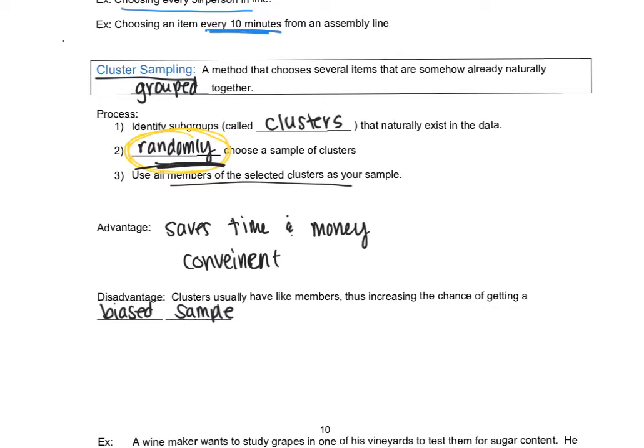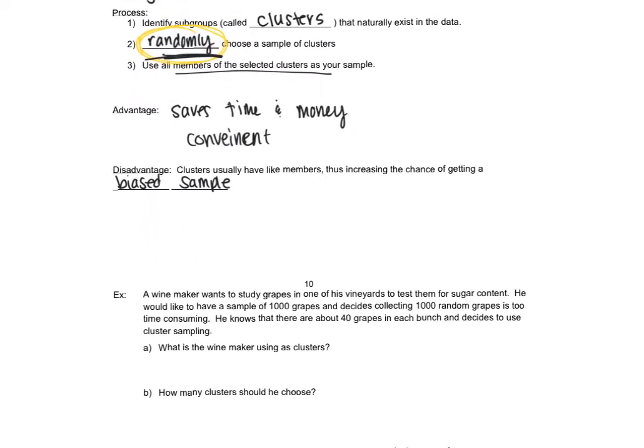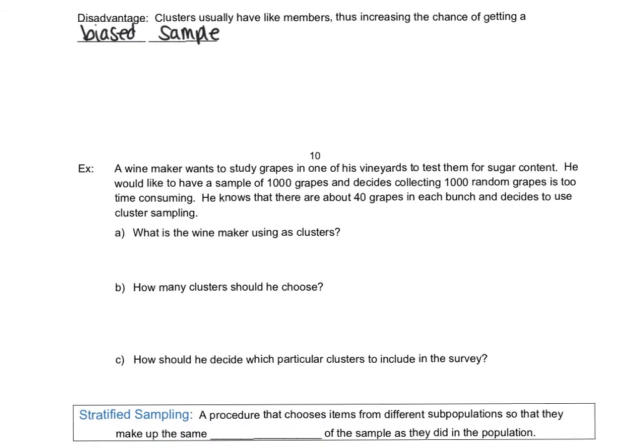So we'll look at an example. A winemaker wants to study grapes in one of his vineyards to test sugar content. So that would be like a variable, our response variable from the previous section. We're going to have grapes and then measure their sugar content. And he would like the sample to have a thousand grapes and has decided that a thousand random grapes is just too time consuming. We go around the farm and collecting individual grapes. It's just going to take us forever. So instead we're going to use cluster sampling. We know there's 40 grapes in each bunch. So we're going to make those our clusters. So our clusters would be a bunch of grapes.